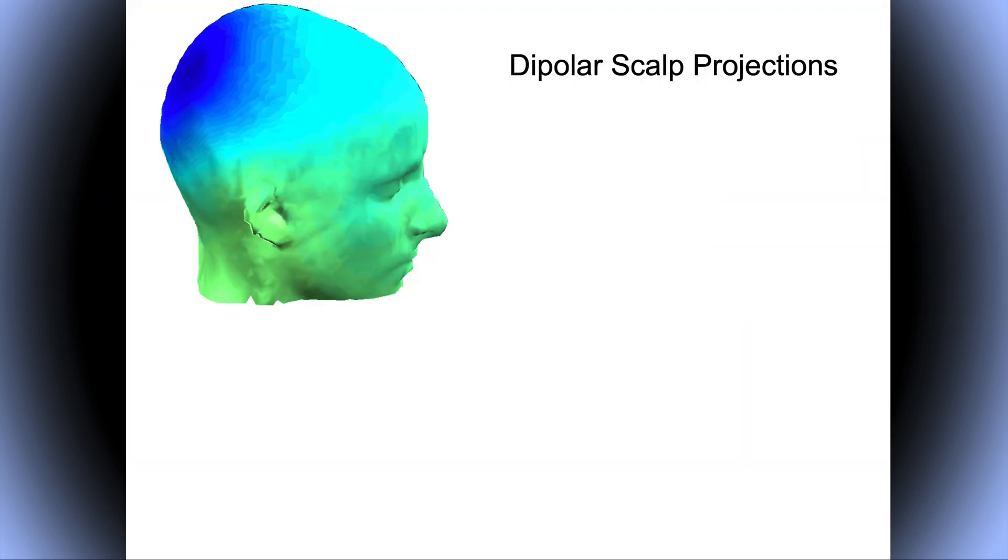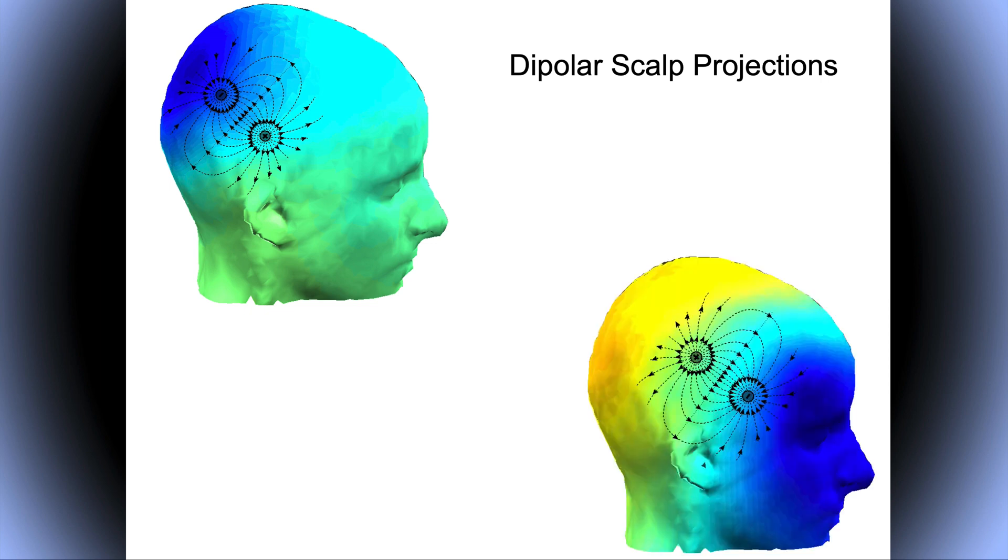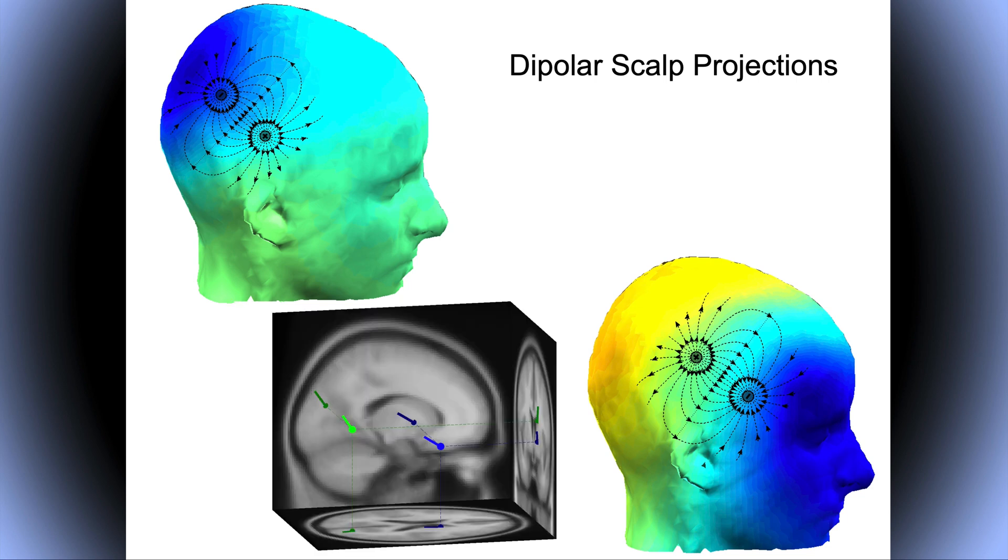When we apply that to ICA, this is an ICA scalp topography, and we can see that this one should be possibly modeled using a dipole in this region, and this other one should be possibly modeled with a dipole of opposite polarity in this region, and we can project these back inside the brain. This is, of course, a very rudimentary method for localizing ICA components. But it's very useful because we can assess the biological plausibility of these components.